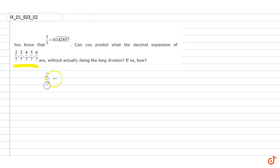We know that 2/7 is equal to 2 times 1/7. And it is given in the question that 1/7 is equal to 0.142857 bar.